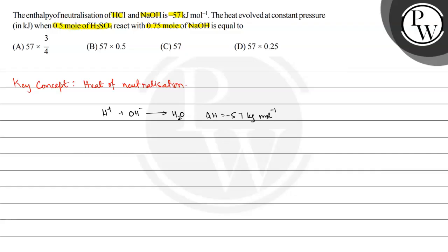For H₂SO₄ and NaOH, we need to find the number of moles of H⁺ and OH⁻. In 0.5 moles of H₂SO₄: one mole of H₂SO₄ contains two moles of H⁺ ions, so 0.5 moles of H₂SO₄ contains 0.5 × 2 = 1 mole of H⁺.